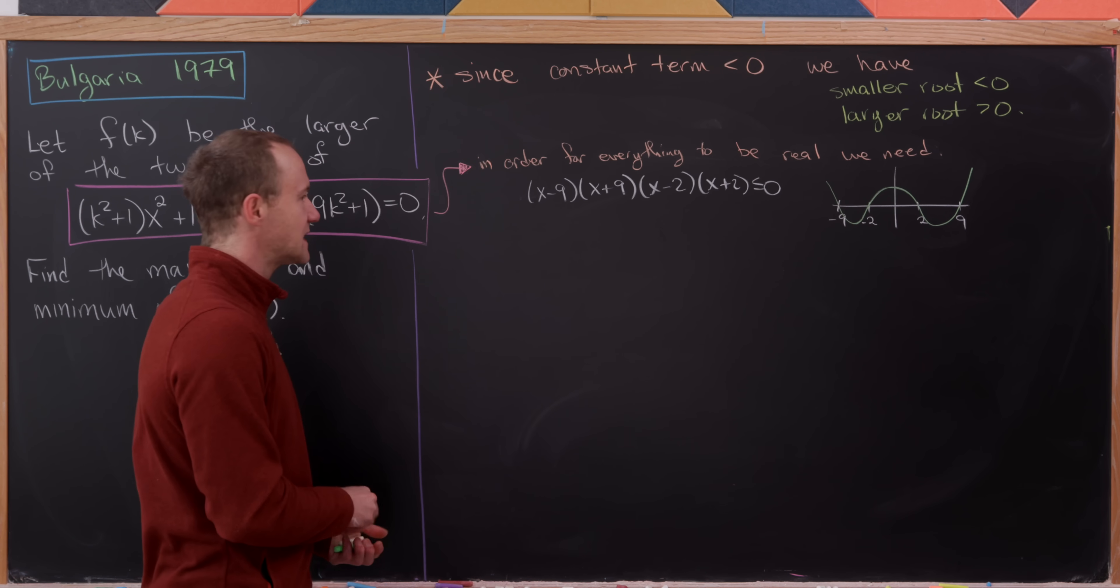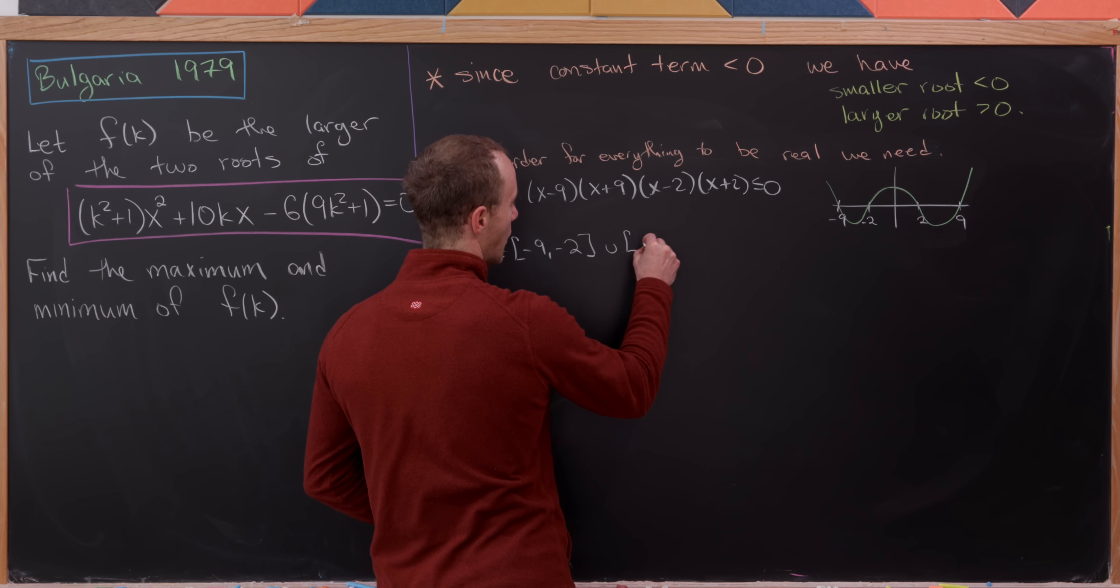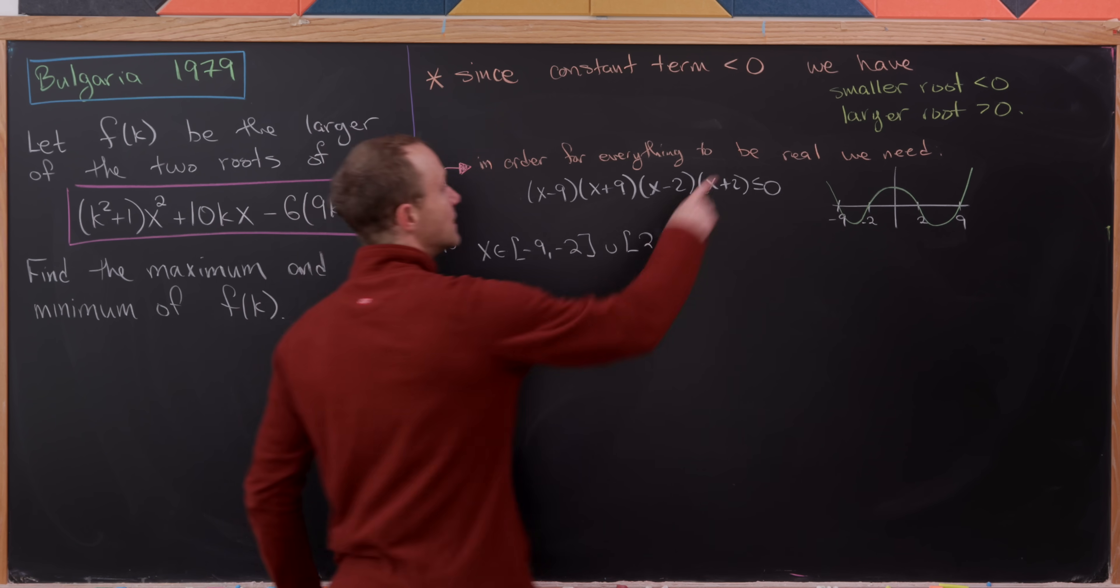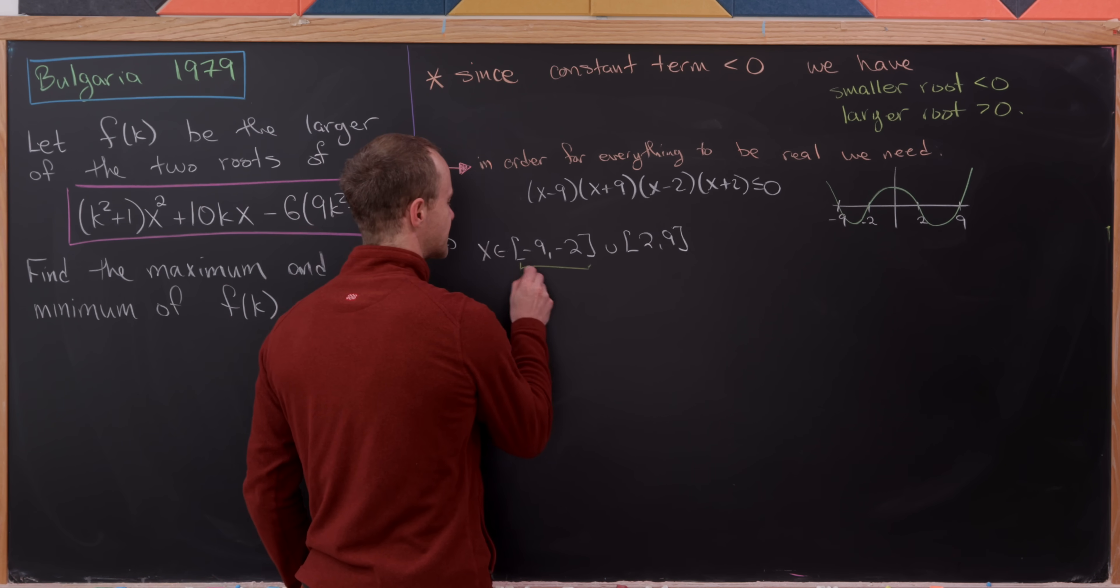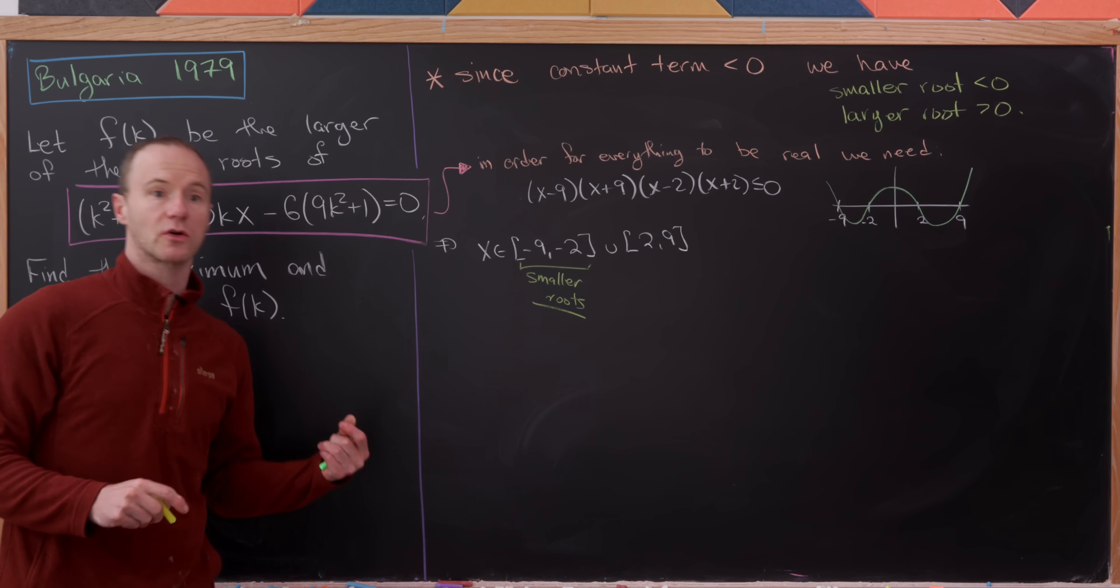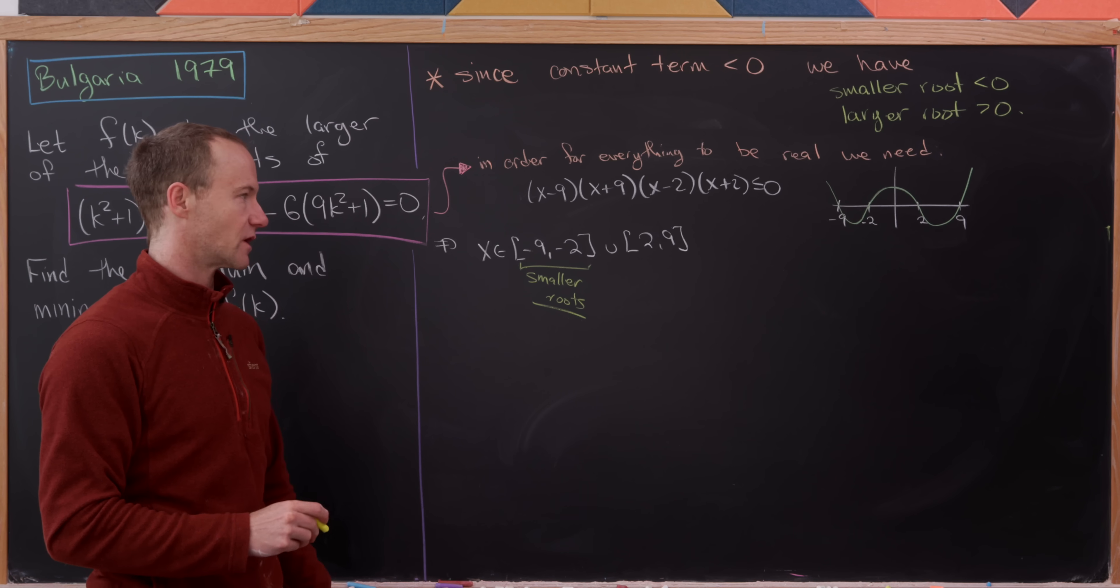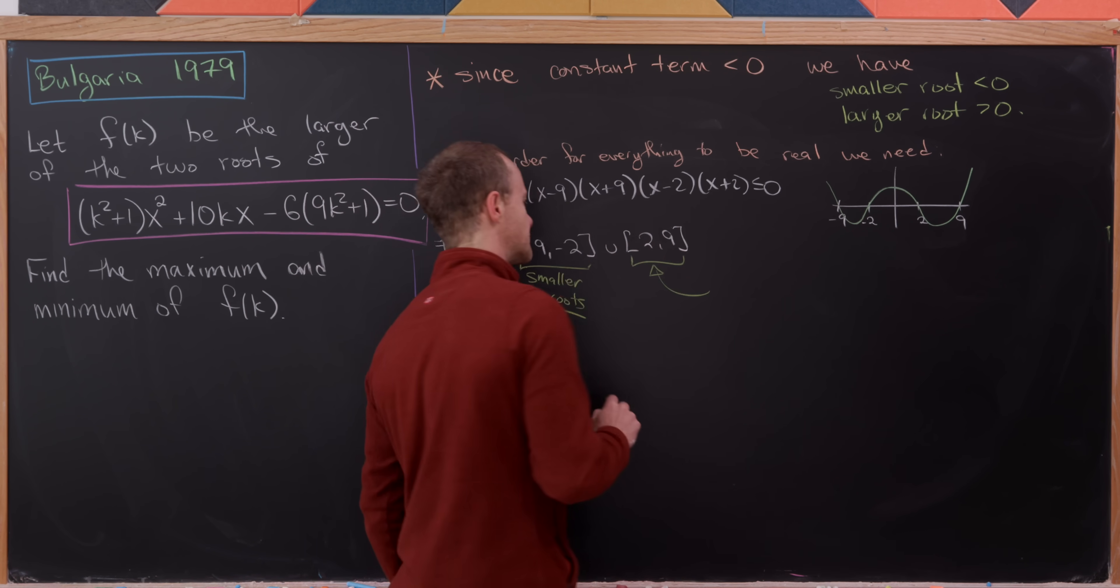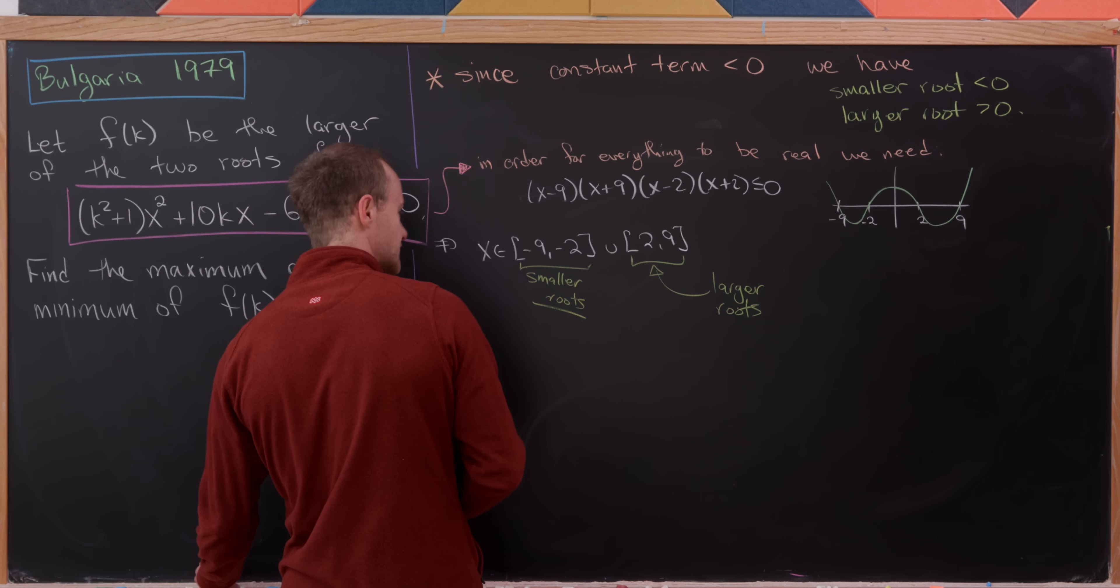We can immediately see when that's ≤ 0. That tells us that x is either between -9 and -2, or between 2 and 9. By the observation we made earlier, the smaller root is ≤ 0 while the larger root is > 0. So all the smaller roots happen in the first interval, and all x values from these intervals are roots because they correspond to certain k values that solve this equation. The values between 2 and 9 represent the larger roots. That's actually enough to wrap this up.